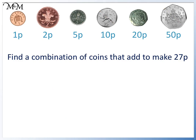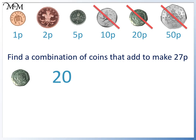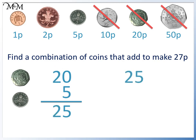Find a combination of coins that add to make 27p. Starting with the largest value coins, 50p is too much. We can take a 20p. We will now continue to cross out coins that are too large. 20 plus 20 equals 40 which is too large. 20 plus 10 equals 30 which is also too large. 20 plus 5 equals 25. We can see that 0 plus 5 equals 5, plus 2 tens equals 25.